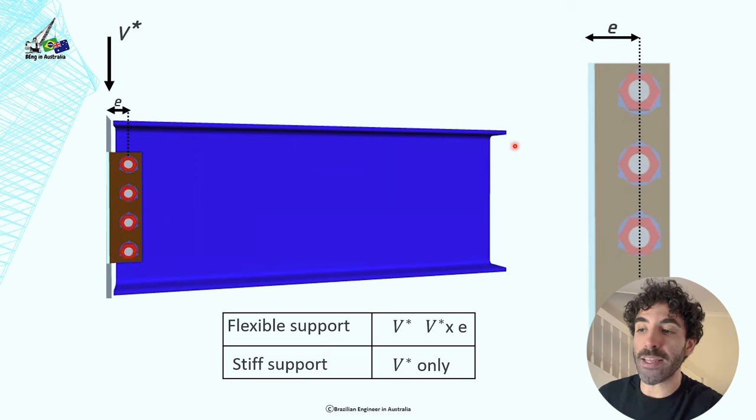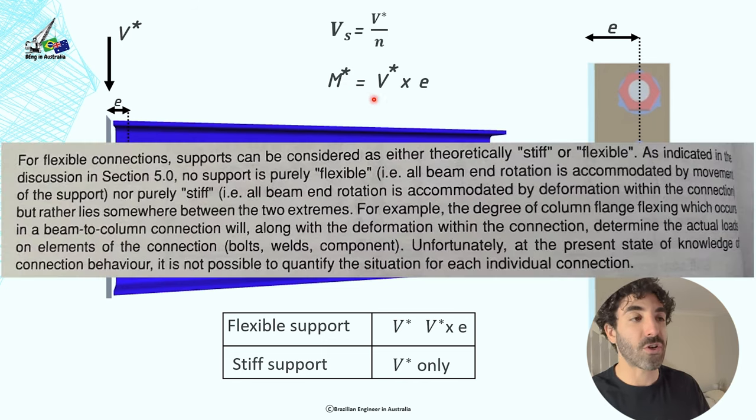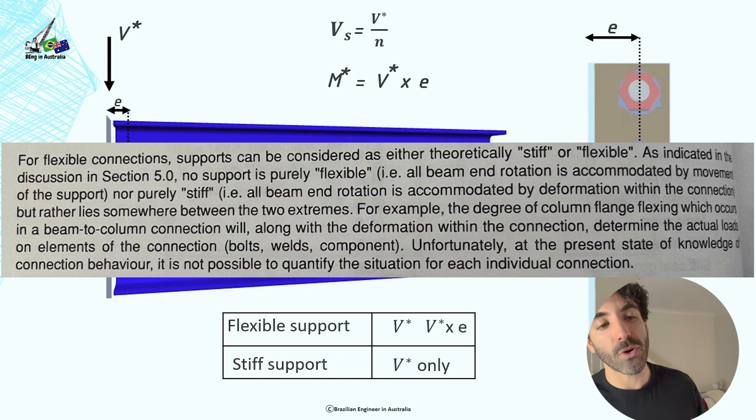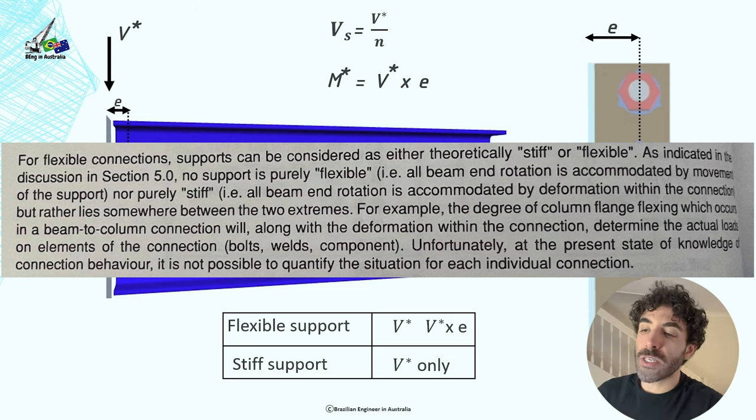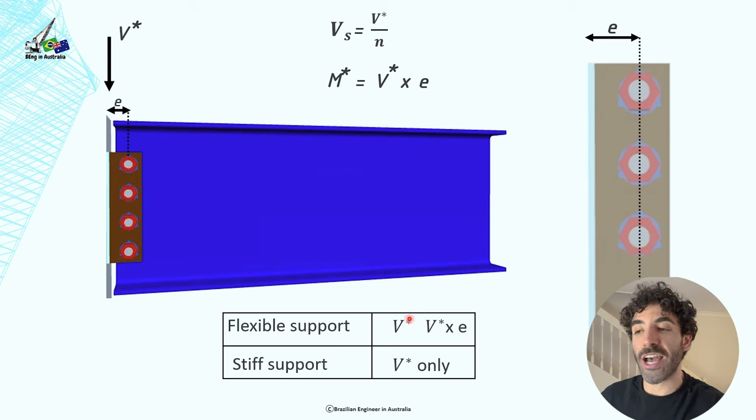So the Australian Institute of Steel Construction says that for flexible connections, supports can be considered as either theoretically stiff or flexible. No support is purely flexible, nor purely stiff, but rather lies somewhere between the two extremes. For example, the degree of column flange flexing which occurs in the beam-to-beam connection. So unfortunately, at the present state of knowledge of this connection behavior, it is not possible to quantify the situation for each individual connection. So therefore, we're going to always use the flexible support design model and account for the bending moment. It's safer, and it will take only an extra 30 seconds to do it.